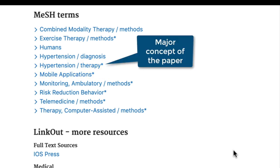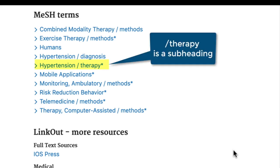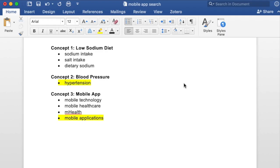Indexers will assign anywhere from two to five terms as major concepts in one paper. The reason 'hypertension' has a slash and then the phrase 'therapy' is because 'therapy' is a subheading. In addition to applying the most appropriate MeSH to a citation, indexers also have a list of subheadings that can be applied to further emphasize the specific focus of the paper. For this term, it means that this article is not just looking at hypertension but focusing on the treatment of hypertension. The MeSH list can also provide you with suggestions for new terms to include in your search. In the case of our example, 'hypertension' and 'mobile applications' look like important terms to add to our growing list.